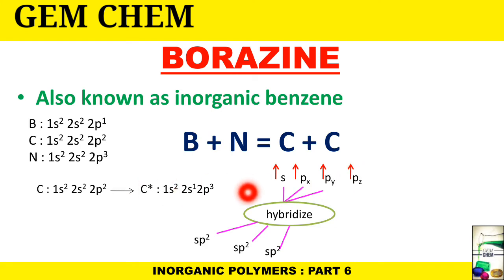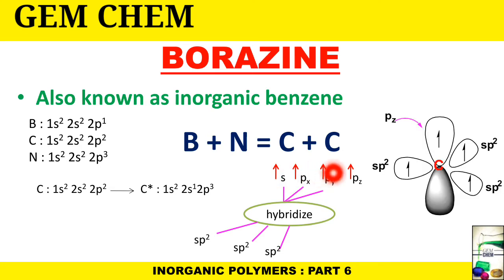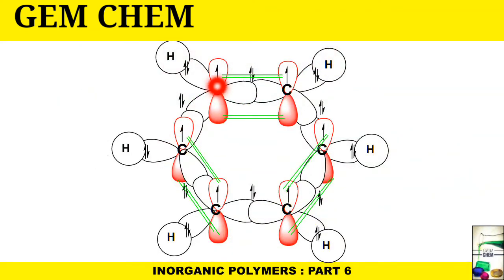If we hybridize s, px, and py, pz will remain as it is. We will get three sp² orbitals on hybridization. If your concept on hybridization is not clear, you can watch videos on hybridization already uploaded—I'll give the link in the description box. If we draw the orbitals around carbon, we have a pz orbital and three sp² hybridized orbitals. In benzene, these p orbitals form the pi bonds and these sp² hybridized orbitals form the sigma bonds—here is a sigma bond with hydrogen and carbon-carbon sigma bond formation. This is the MO diagram for benzene.